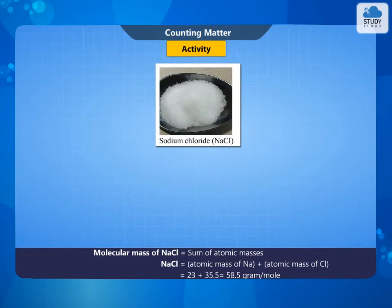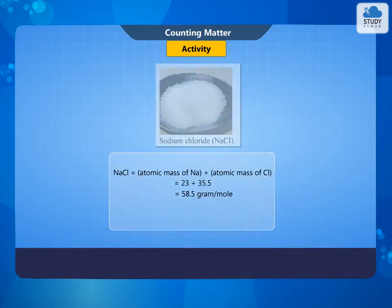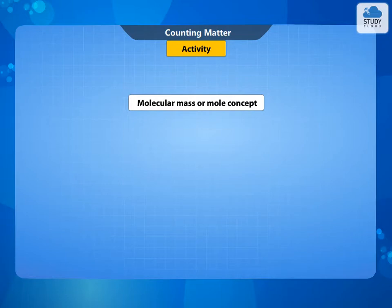Molecular mass of NaCl is equal to the sum of atomic masses. NaCl = atomic mass of Na + atomic mass of Cl = 23 + 35.5 = 58.5 grams per molecule.